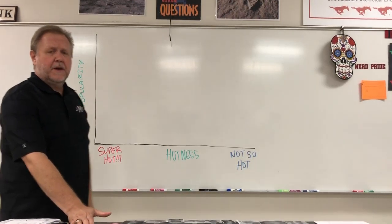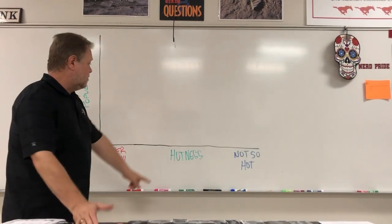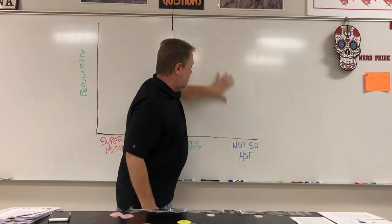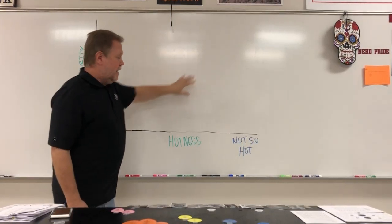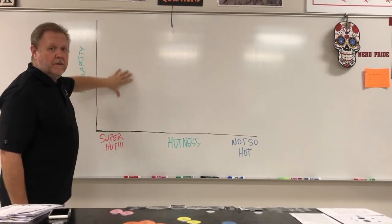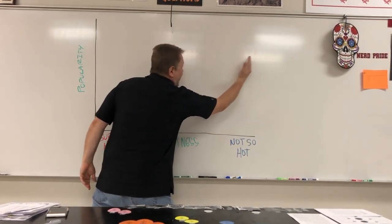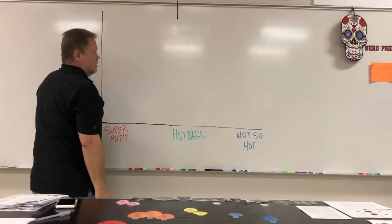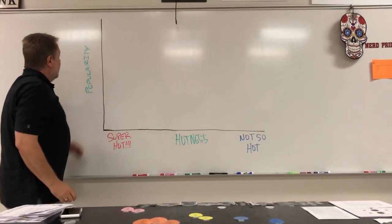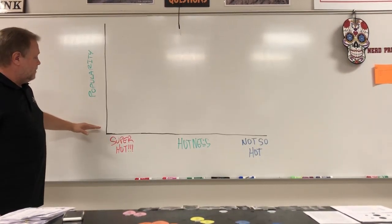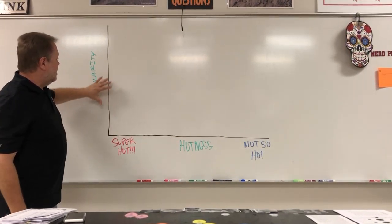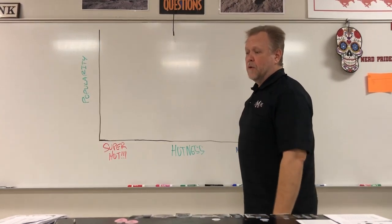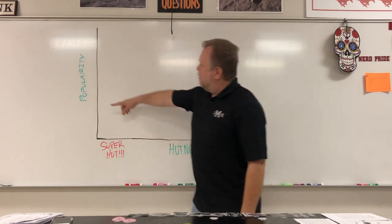On these axes, we're going to take a bunch of people's pictures and put them based on two things: first, their hotness — how physically attractive they are. Less attractive people go on the right end, medium-looking in the middle, and very attractive people go to the left. It goes from right to left, which is a little different, and we'll talk more about that later. We're also going to have popularity — how well known they are — on the vertical axis.